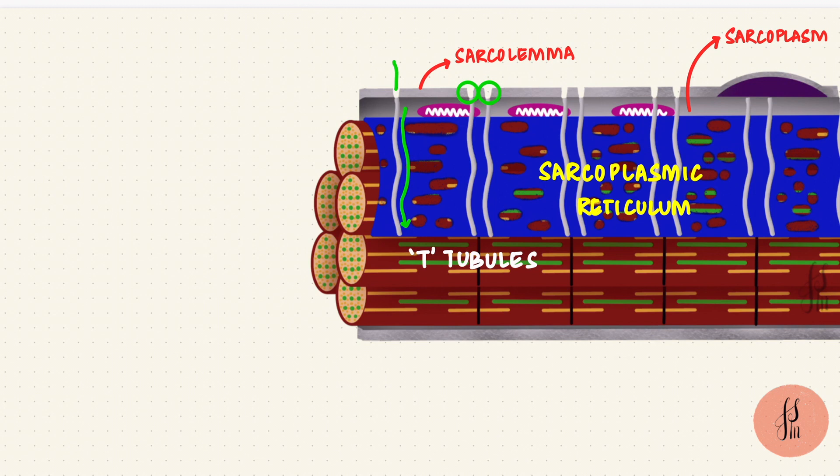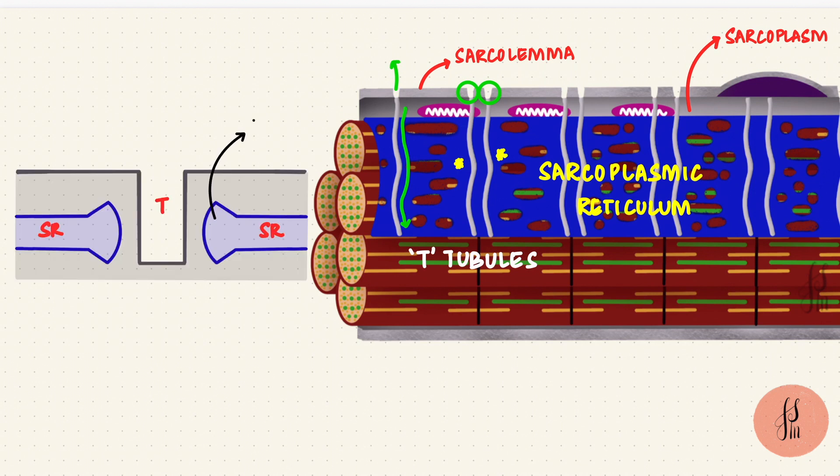So the T-tubules open to the extracellular space. They are associated with the longitudinal sarcoplasmic reticulum on either side. Now these dilate to form terminal cisternae. So two of those, along with the T-tubule, form a triad. This is the sarcotubular system.